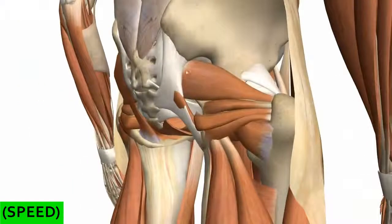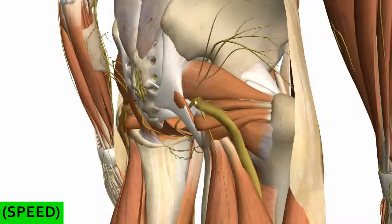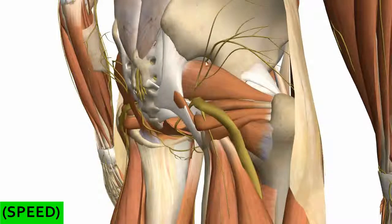The piriformis runs through this greater sciatic foramen, and there are two little gaps above and below the piriformis. Above the piriformis, vessels and nerves pass through, and below the piriformis, vessels and nerves also pass. Importantly, below the piriformis you get the sciatic nerve, and above you get the superior gluteal nerve and vessels. You can see the sciatic nerve emerging below the piriformis, and the superior gluteal nerve coming above the piriformis.